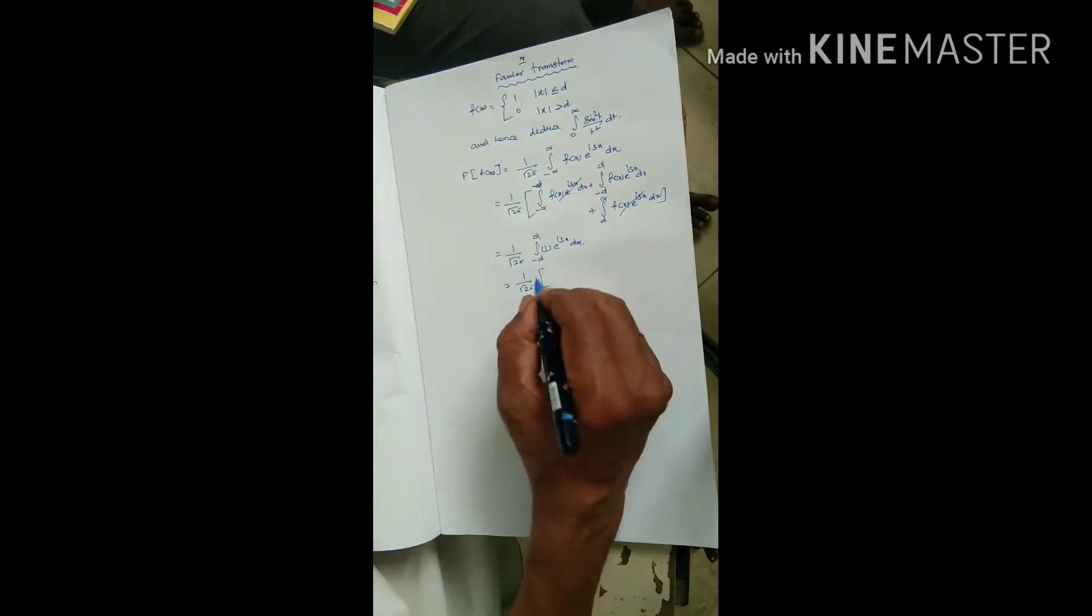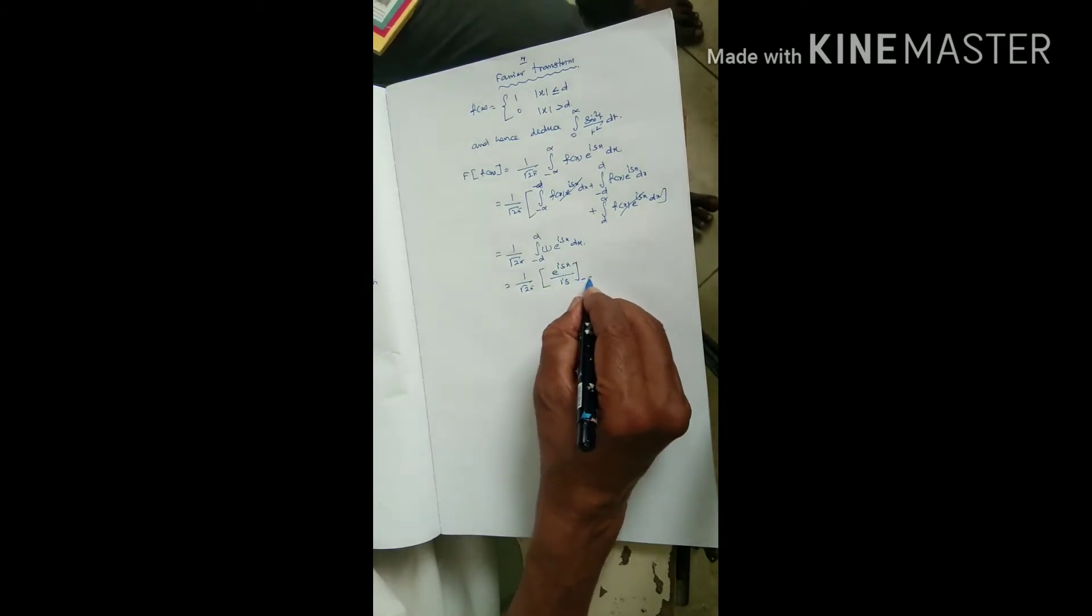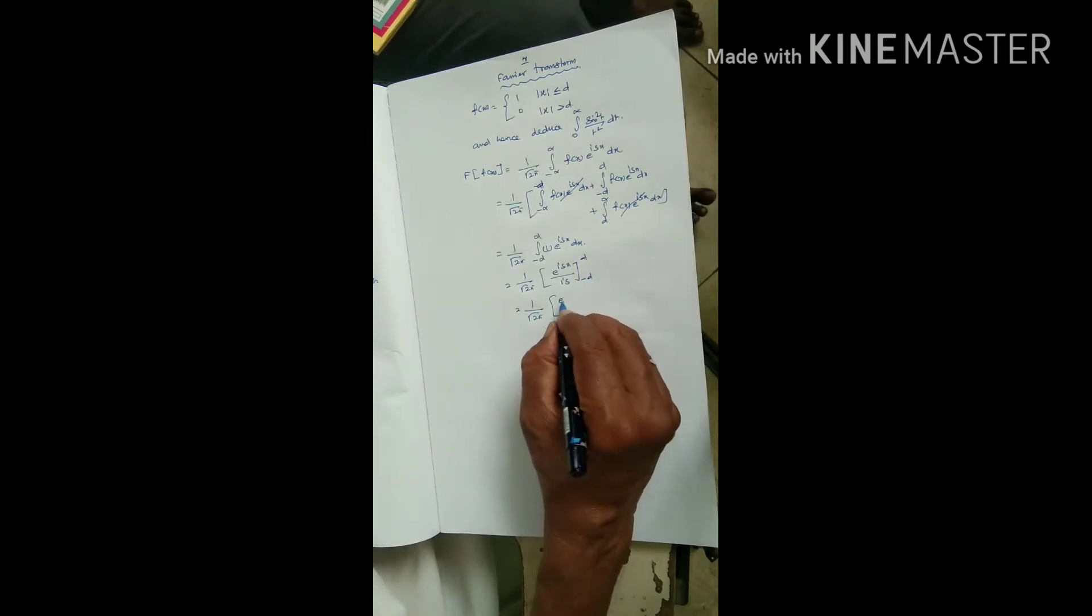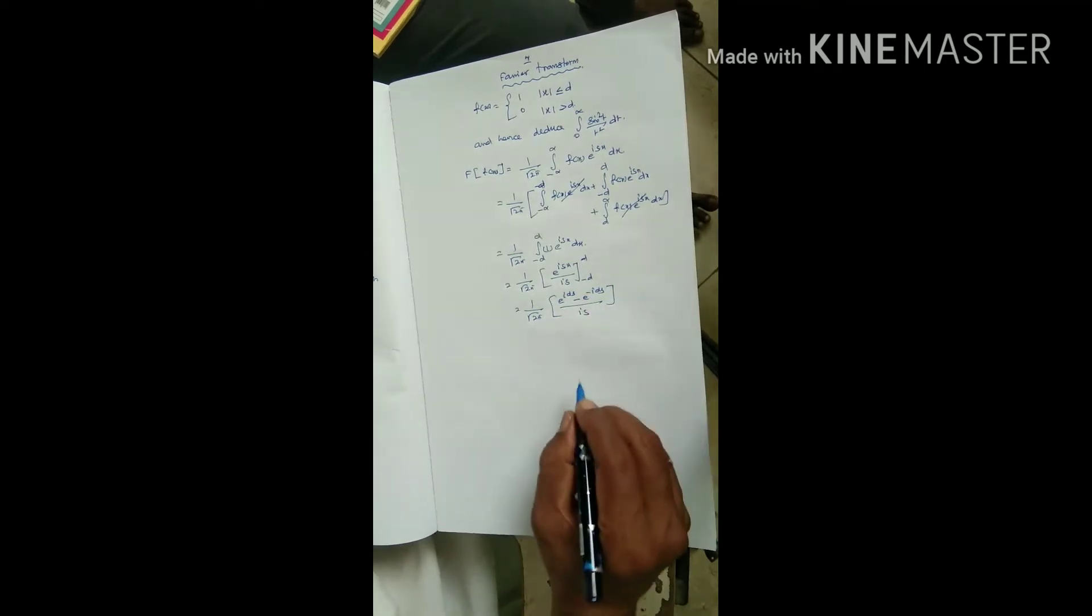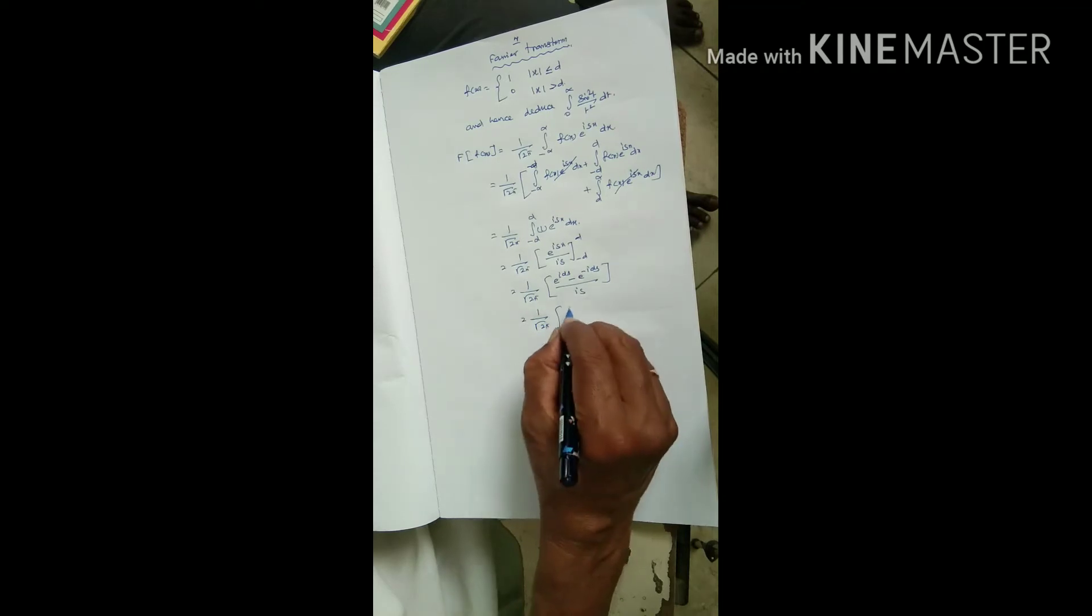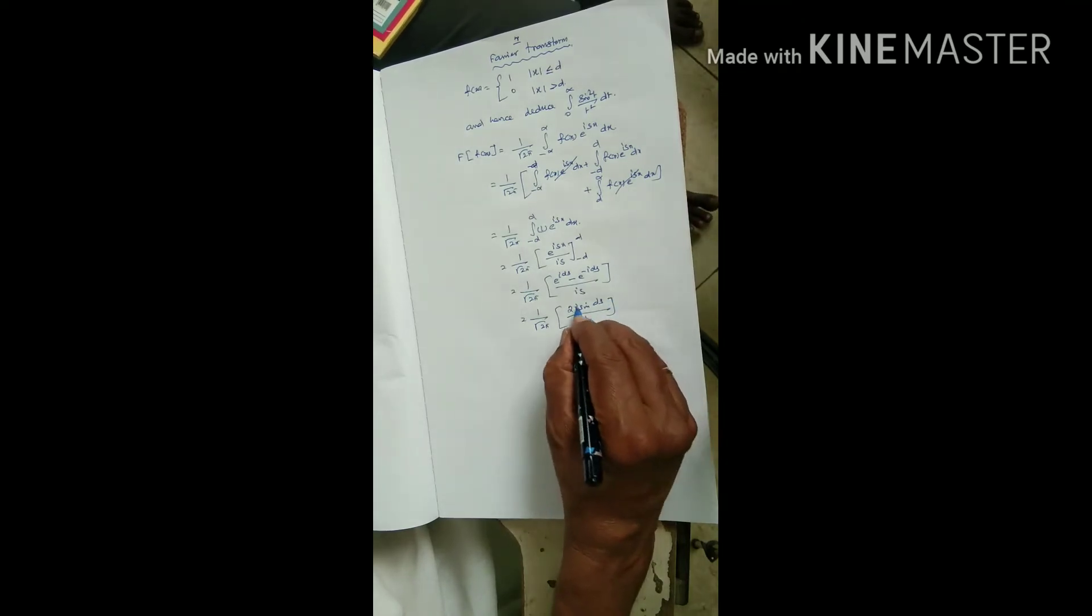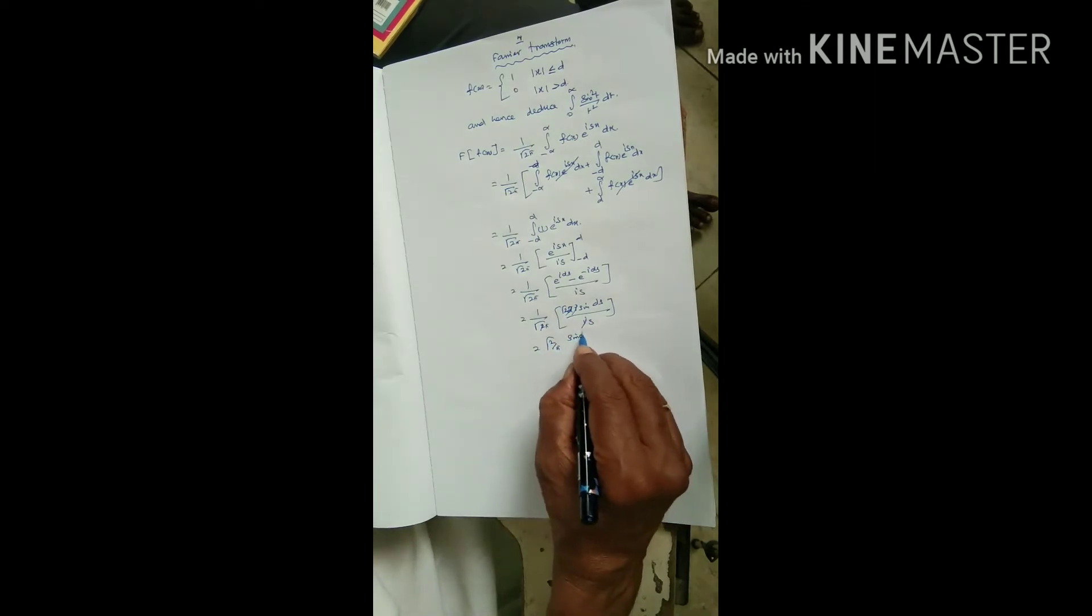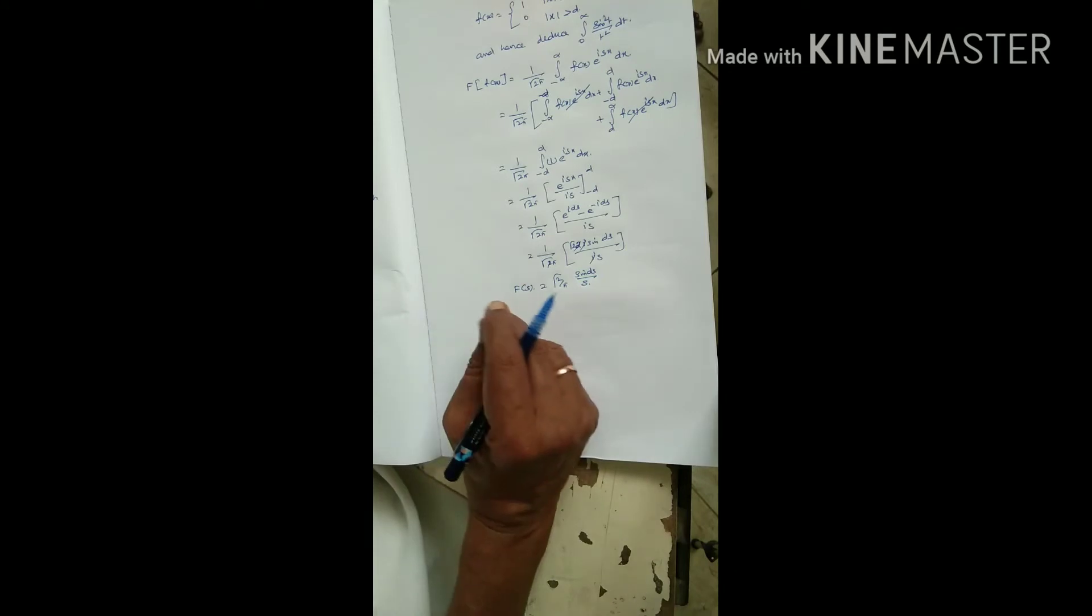Integrating e power is x gives e power is x by is, evaluated from minus d to plus d. This simplifies to root 2 by pi sine ds by s. This is the Fourier transform F of s.